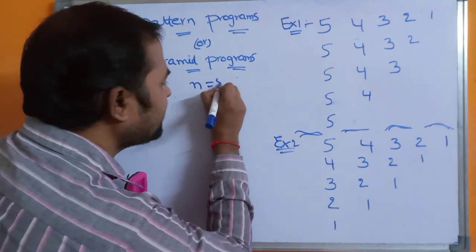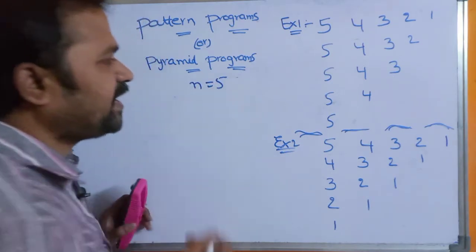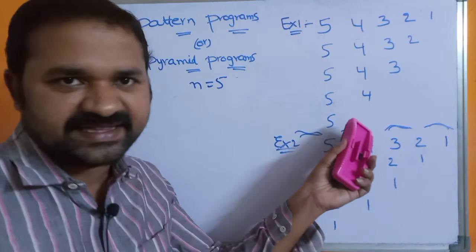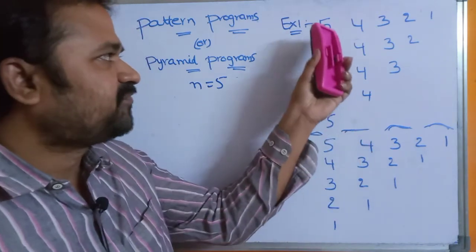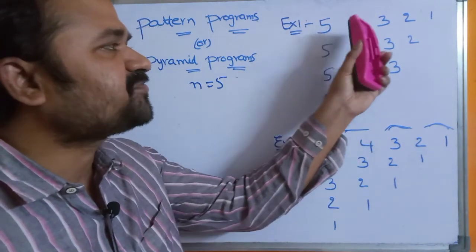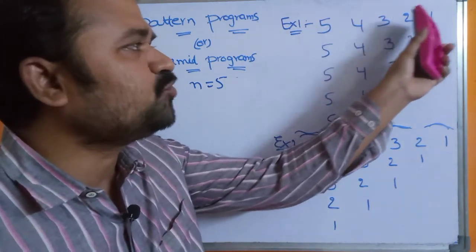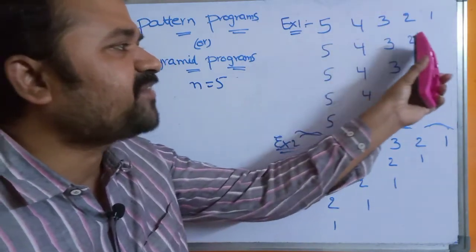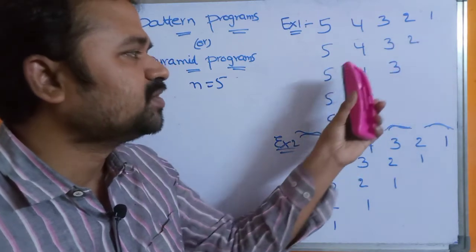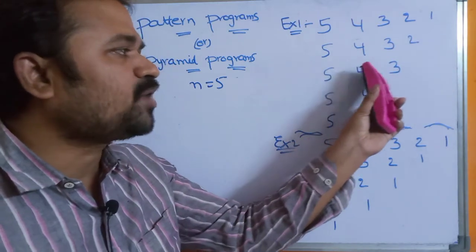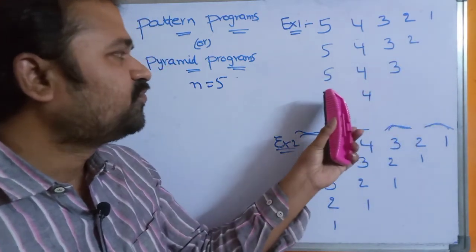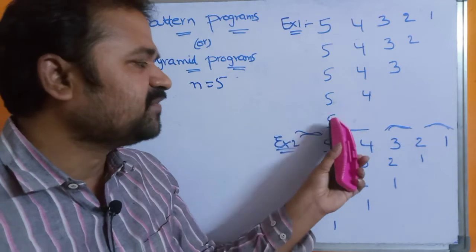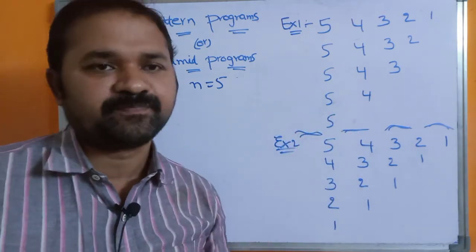If n is equal to 5, then we have to display 5 rows. The first row contains 5 4 3 2 1, the second row contains 5 4 3 2, the third row contains 5 4 3, the fourth row contains 5 4, and the fifth row contains just 5.